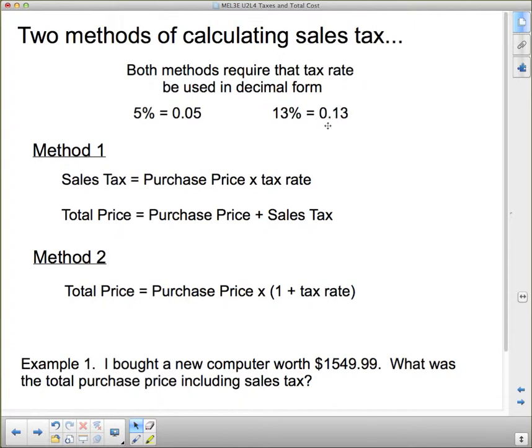We've got two different methods here for calculating sales tax. The first one is a two-step method. Sales tax equals purchase price times the tax rate. Total price equals purchase price plus sales tax. So you calculate what the sales tax is and then add the sales tax to the purchase price.